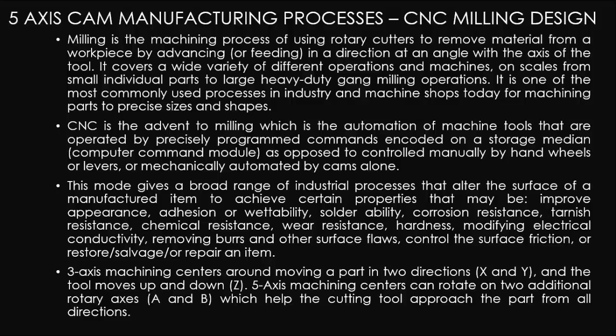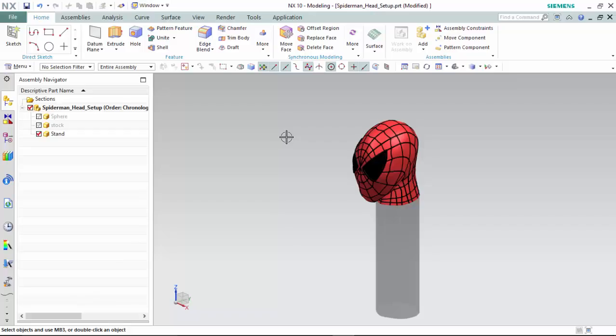3-Axis Machining centers around moving a part in two directions, X and Y, while the tool moves up and down the Z-Axis. 5-Axis Machining centers can rotate on two additional rotary axes, A and B, which help the cutting tool approach the part from all directions.